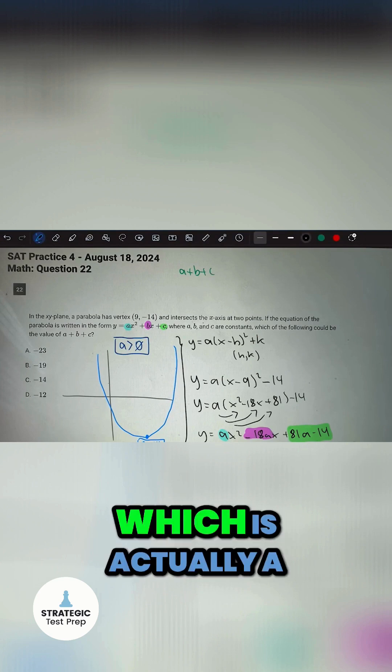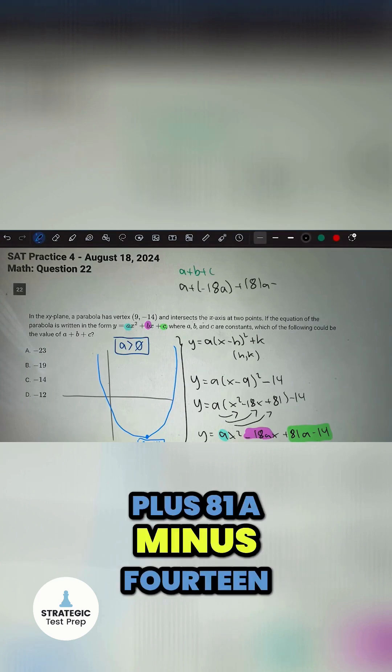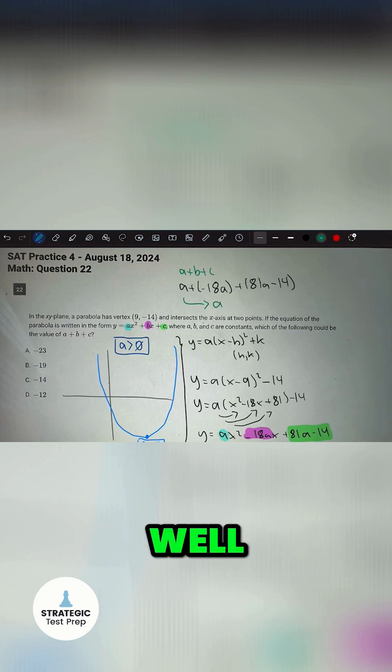for a + b + c, which is actually a + (-18a) + 81a - 14. The only variable we have here is a, and we know that a is greater than zero or positive. So if